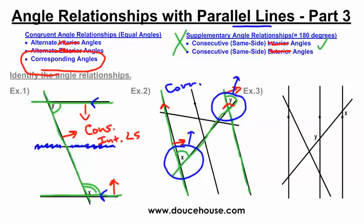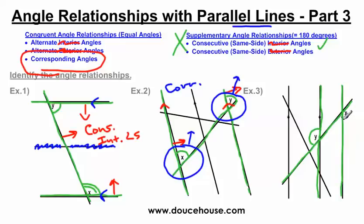The last example also has three parallel lines and two transversals. Remember the trick: draw on the lines that help create each angle. Angle y is using this line and this line. Angle x is also using this line and this line. This angle is obtuse and this angle is obtuse, so these two angles are congruent, leading me to believe the answer will be one of the congruent angle relationships.